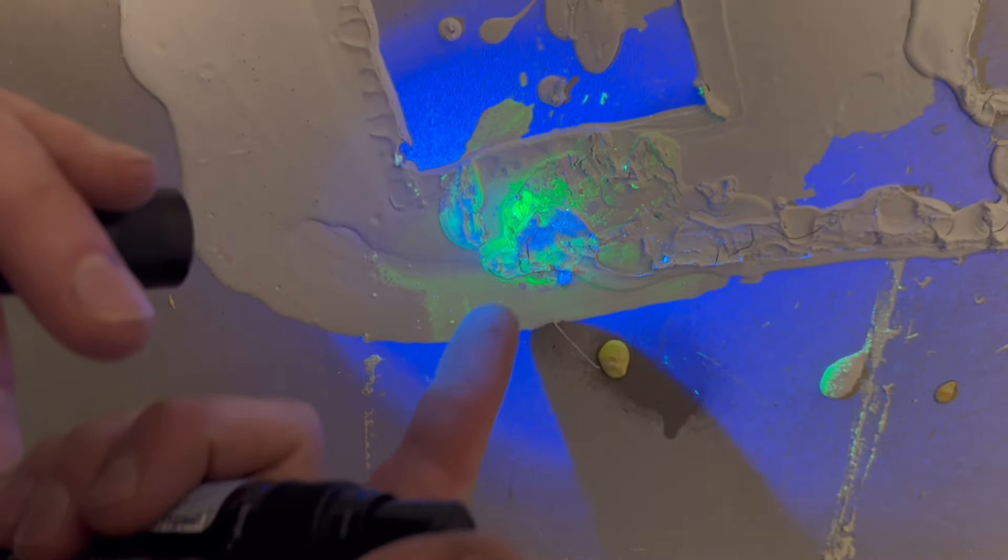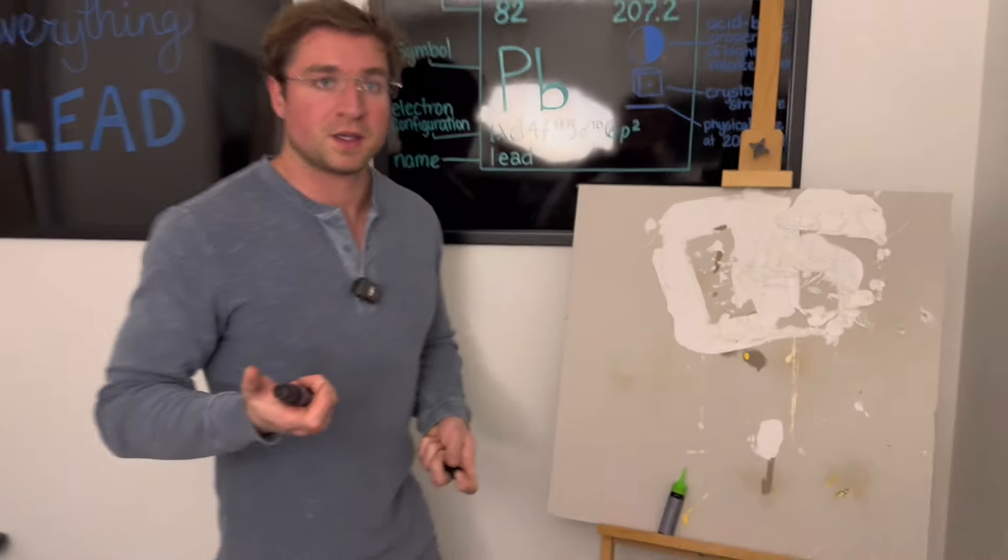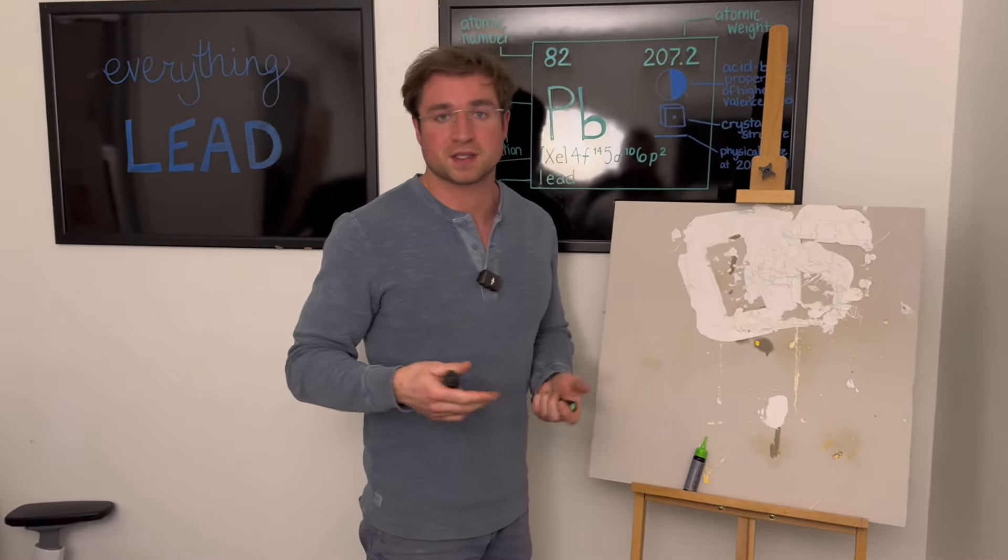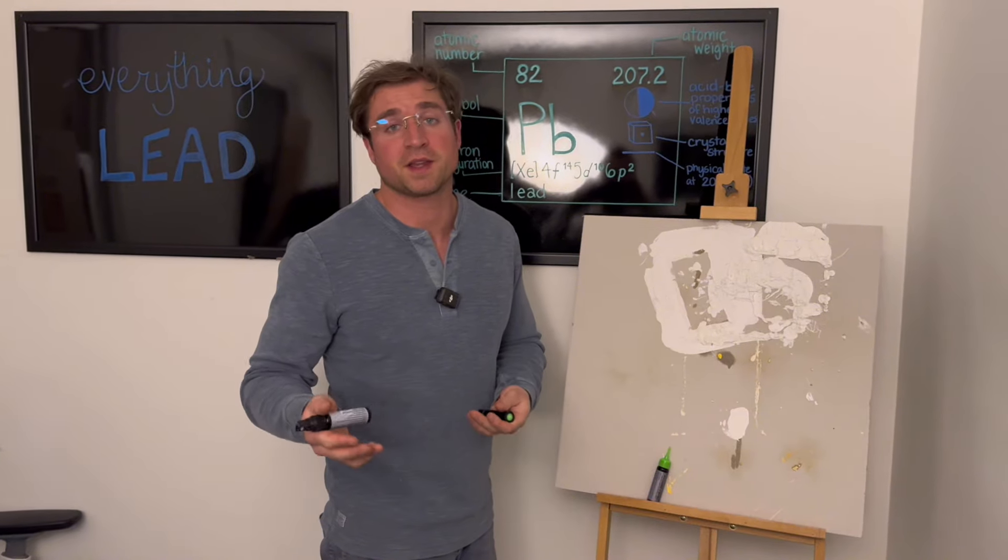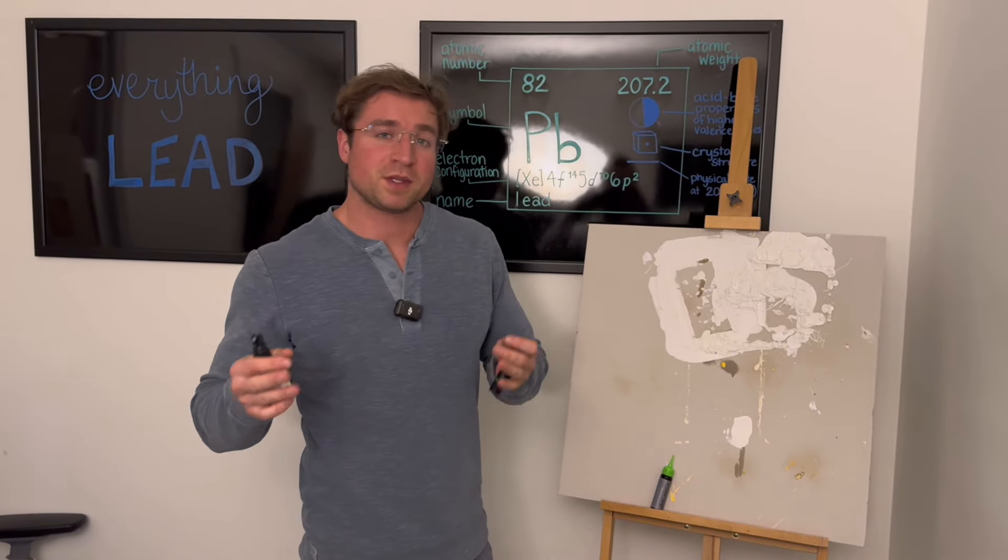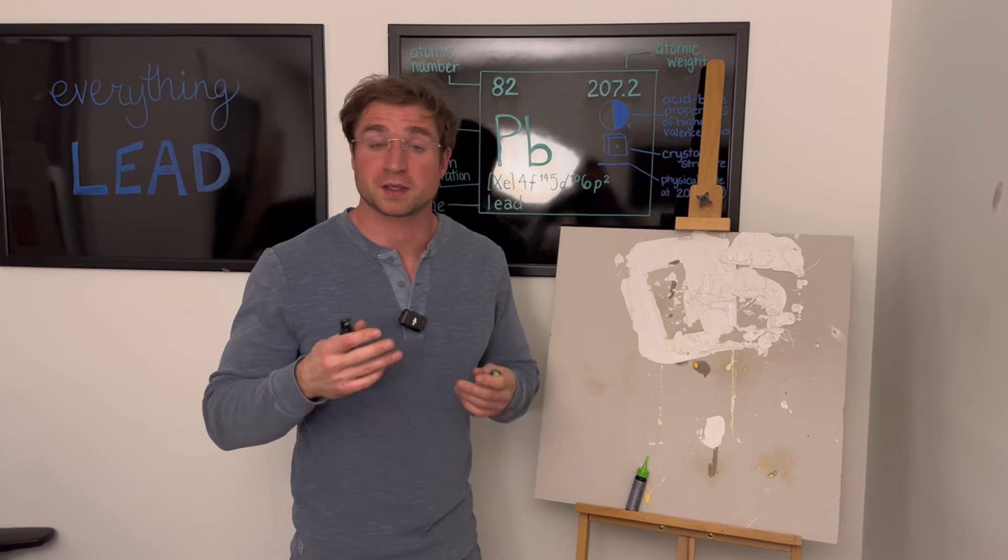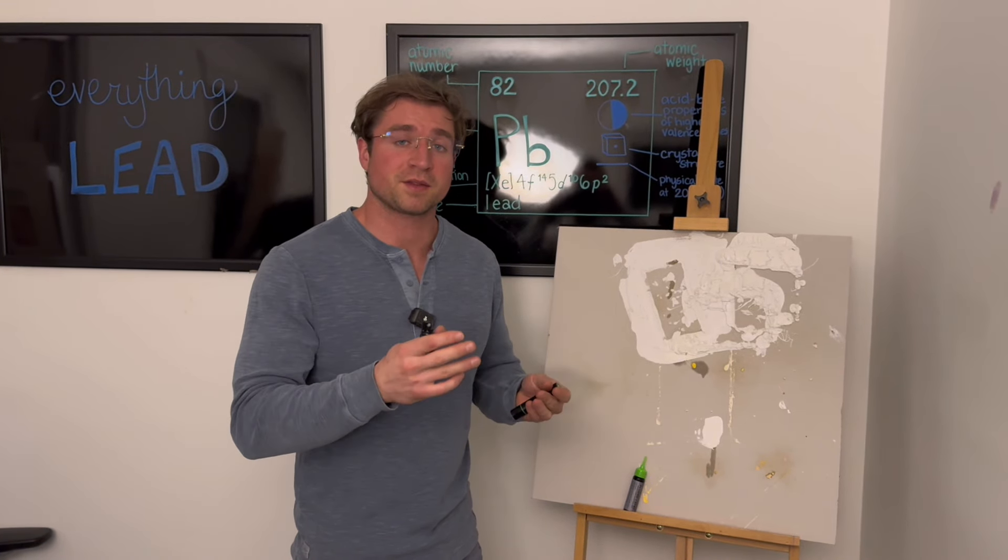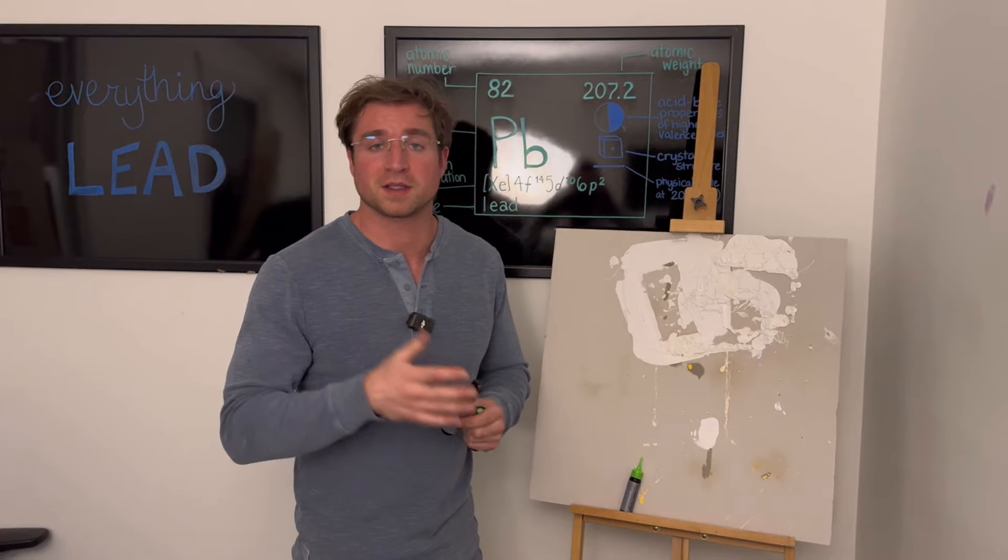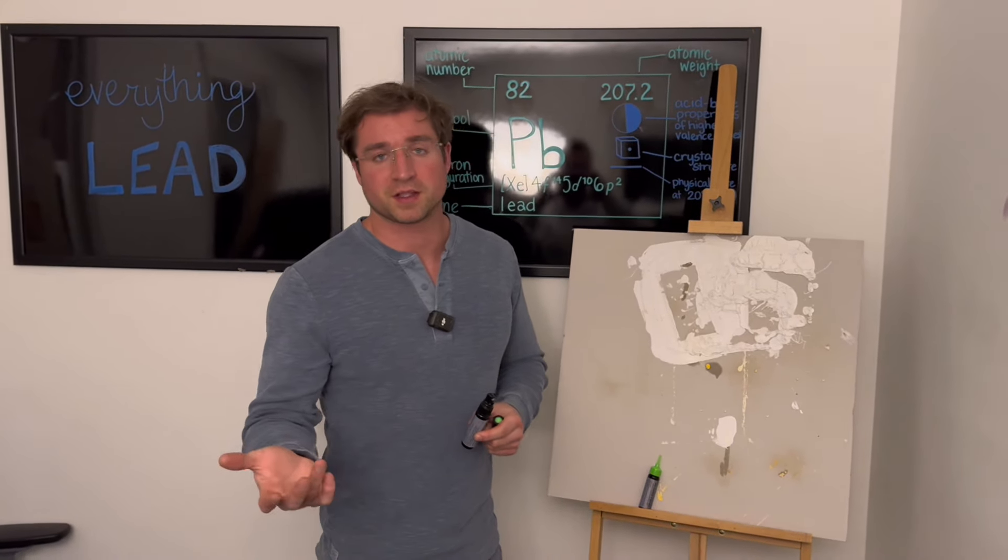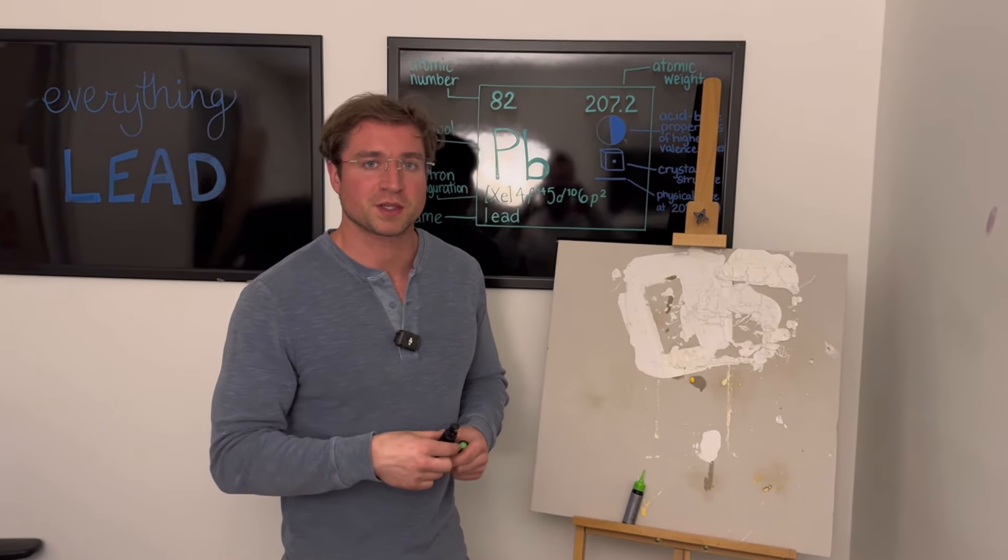This is lower concentration. This test kit goes down to 500 parts per million and that's ten times lower than the limit of 5,000. So while this can't be used to comply with the RRP rule or do a technical lead inspection because lead inspections only identify lead-based paint as defined in 1992 as 5,000 parts per million or one milligram per square centimeter.